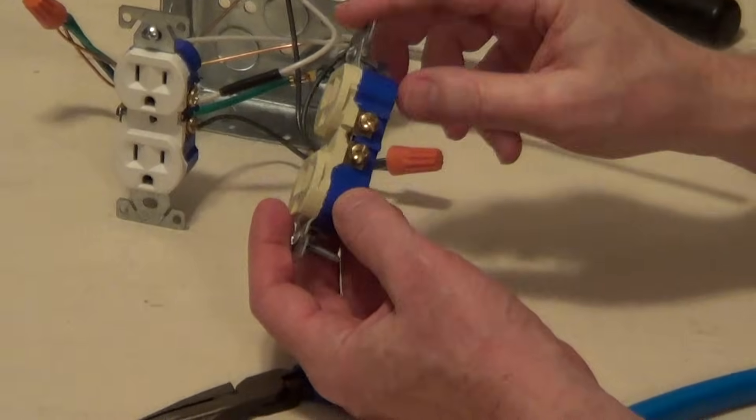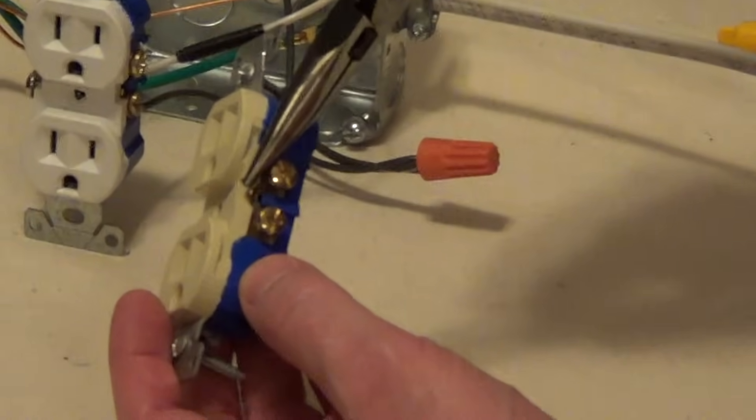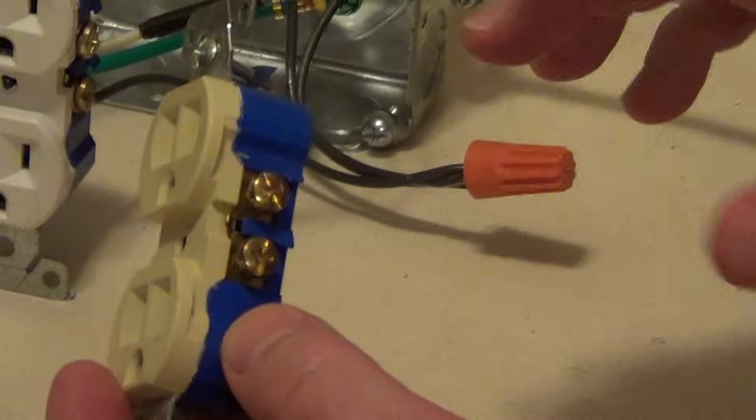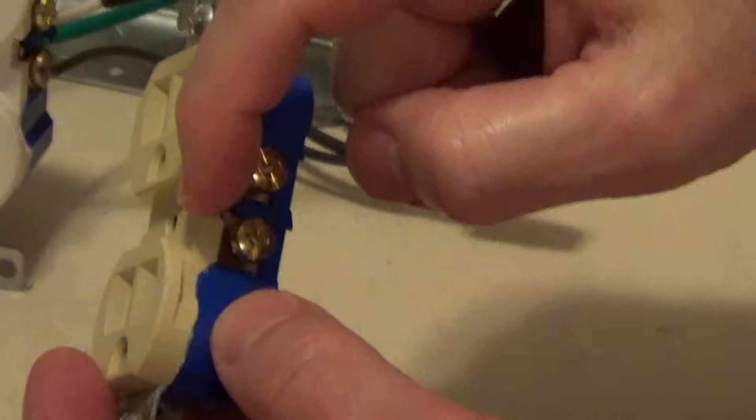But on the hot side, you're always going to have this metal connecting tab. So what we have to do, because we have two hots, we need to break this tab.